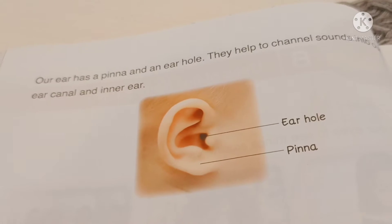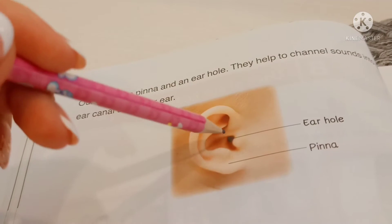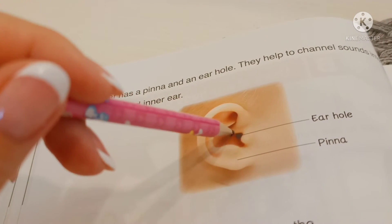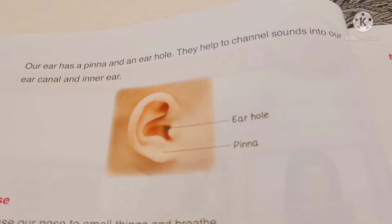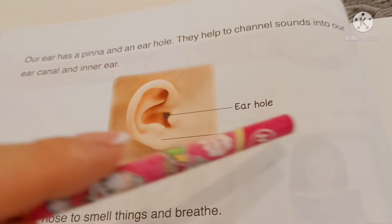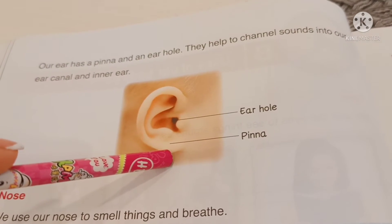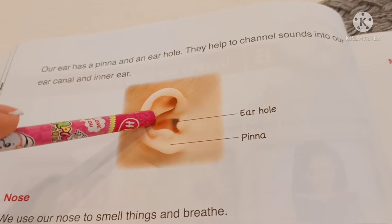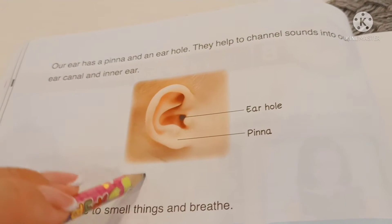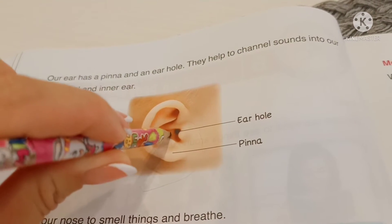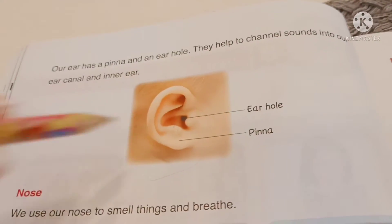Our ear has a pinna — this is the pinna. And this is the ear hole. The ear hole and pinna help to channel sounds into our ear canal and inner ear. So, sound goes in here, and the pinna and ear hole help to do this.